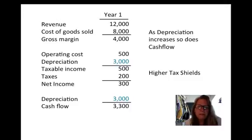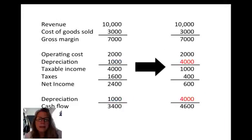This is because we have what's called higher tax shields—we're shielding more of our money from taxes, so we pay less taxes. This is an example of a different cash flow where we have revenue, cost of goods sold, and gross margin.